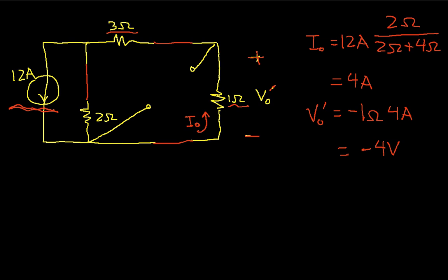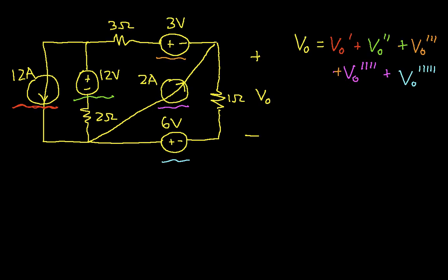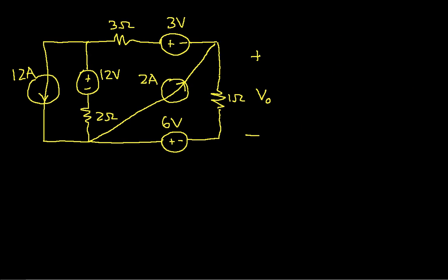So we've got our first voltage. Let's go back to our original. We now know that V0 prime is negative four volts. Wasn't that fun? Let's do the same thing, but now we'll find the output voltage due to this 12-volt source.